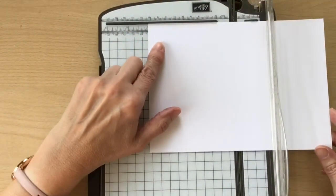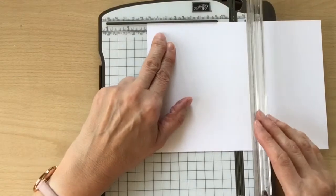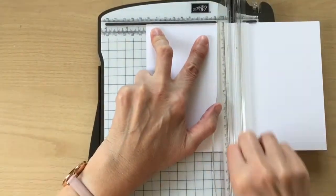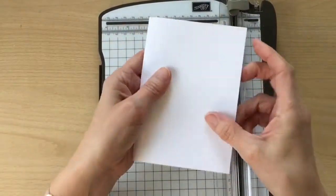So let's just do the scoring. So long side at the top, 10.5 centimeters and score. And that is our card base.